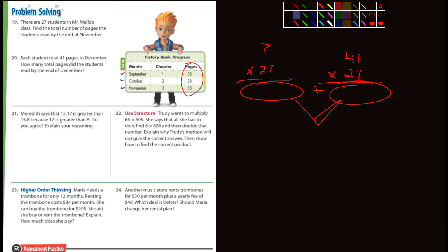21. Meredith says that 15.17 is greater than 15.8 because 17 is greater than 8. Do you agree? Explain your reasoning. Let's look at it here for a moment. We're going back here into chapter 2. So here's our number, 15.17, and we're comparing that to 15.8. So what place is this? This right here is the tenths place. If I can write decent, we'll get it.